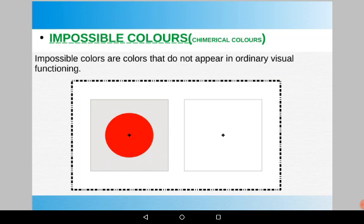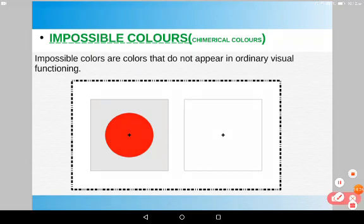The next biological effect is impossible colors, also called chimerical colors. Impossible colors are colors that do not appear in ordinary visual functioning — we can't see them in real life. But we can see them as an effect of another color our eyes have already been exposed to. For example, watch the red on a gray background for 30 seconds, then look at the white background. You will see a color you have never seen in real life — something bluish-green. Those are known as impossible colors.